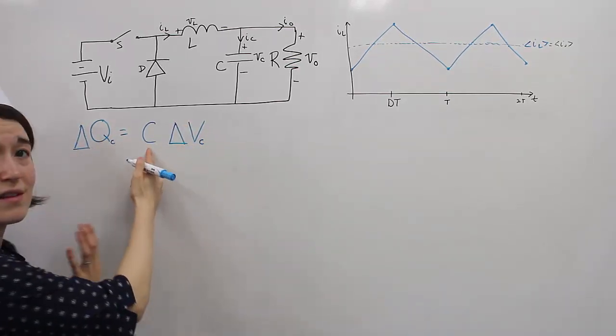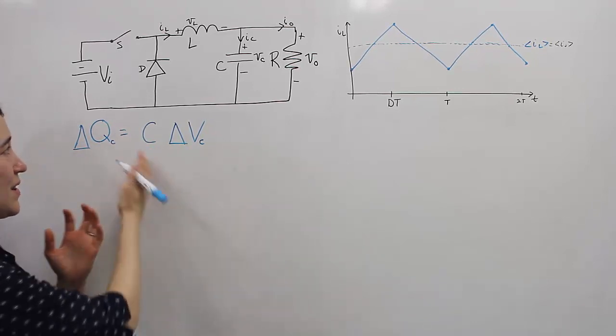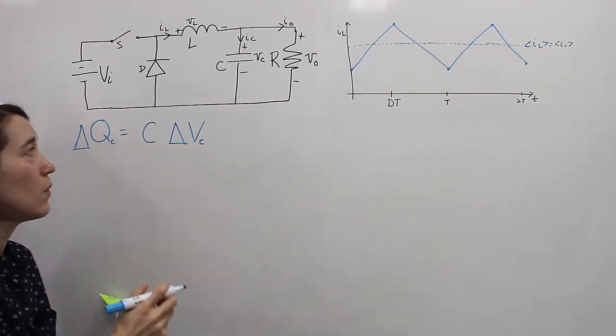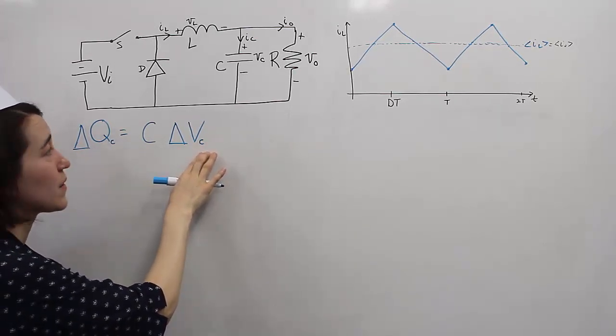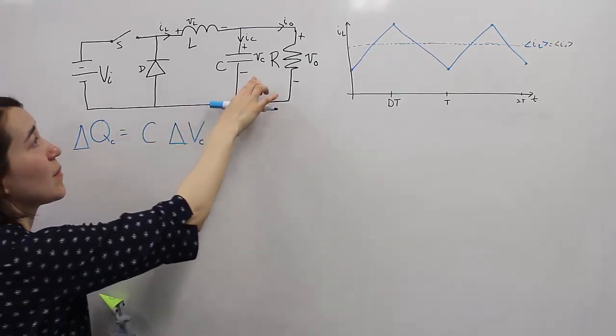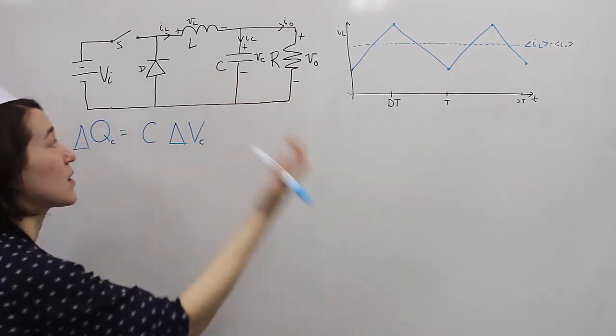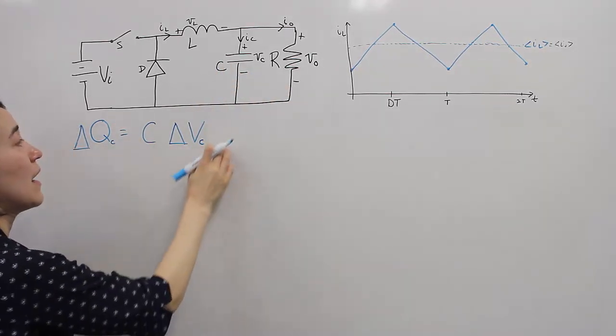So we're going to look at the delta of both of these. And because the capacitor is a constant value, it doesn't get a delta, it's just a constant. So what we can do is, if we want to get a certain ripple, so this change in the VC, because it's the same as the output voltage, it's equivalent to the output ripple.